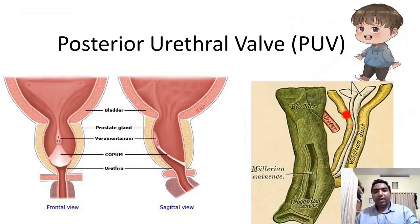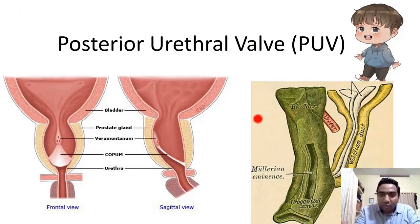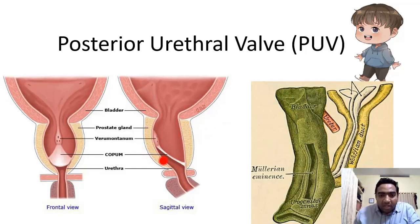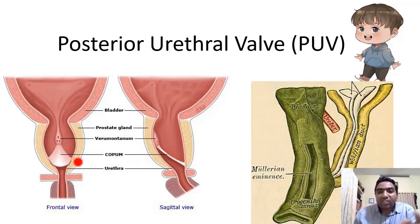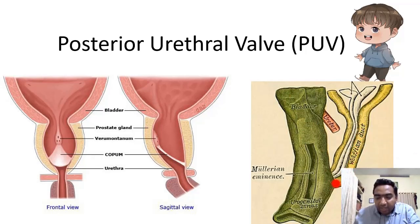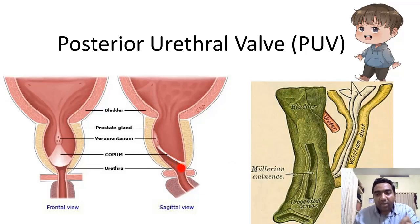Coming to the pediatric age group: the main problems are posterior urethral valve (PUV) and hypospadias. In PUV, there is a valve-like structure with a small opening in the posterior urethra. This is a developmental problem — if the opening of the Wolffian duct into the urogenital sinus is abnormal, a valve-like deformity can form, called the posterior urethral valve. It acts like a stricture.